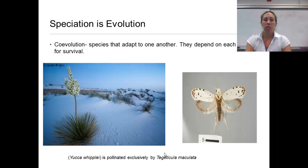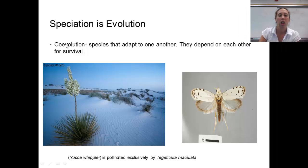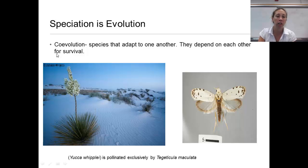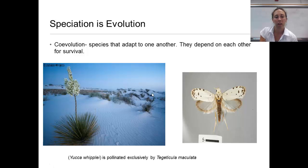Co-evolution refers to species that adapt to one another and depend on each other for survival. For example, a yucca plant and a moth that pollinates only yucca plants — without this moth, the yucca plants wouldn't be able to pollinate. They evolve together; the yucca plant evolved alongside the moth.